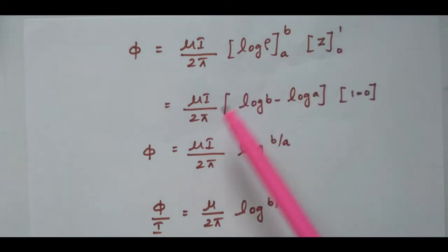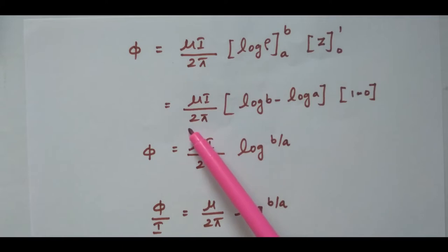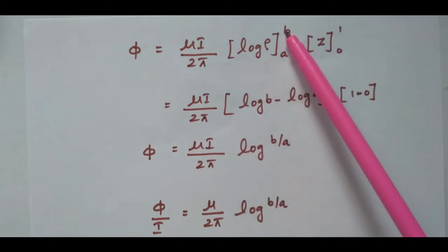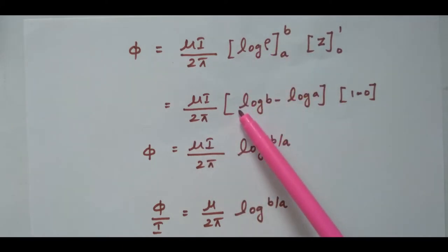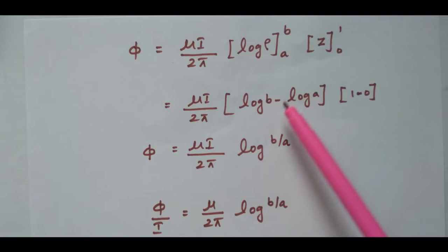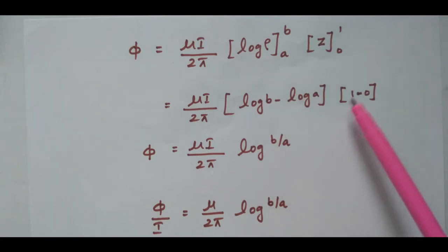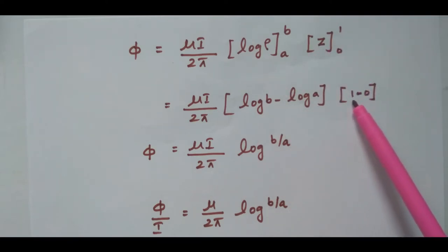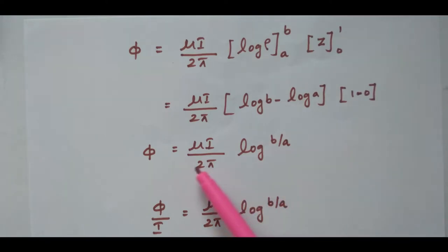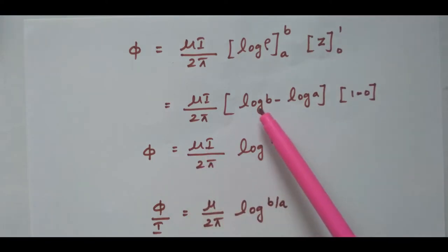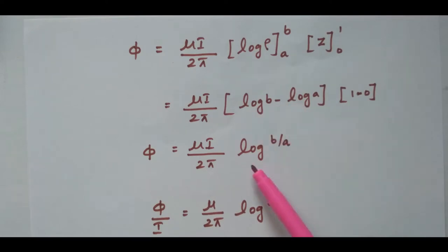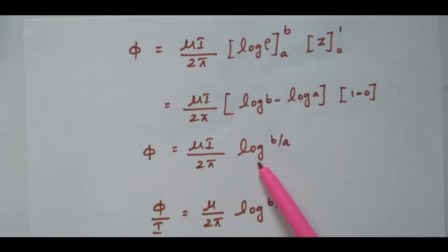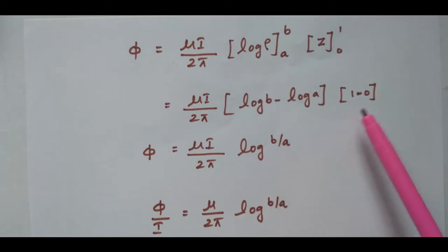Substituting the limits: for the radius, log b minus log a equals log(b/a); for the length, upper limit 1 minus 0 equals 1. So φ equals μI divided by 2π times log(b/a).